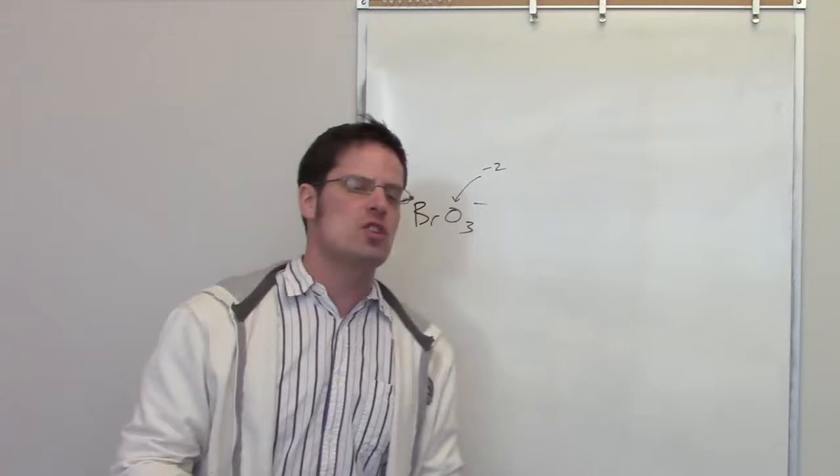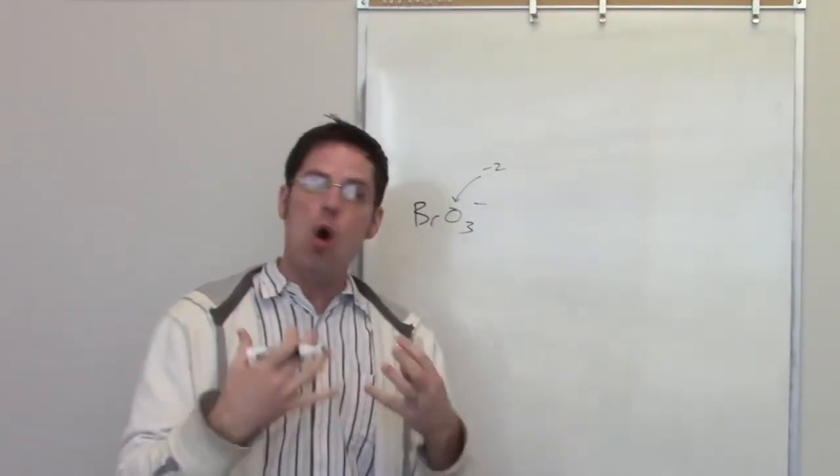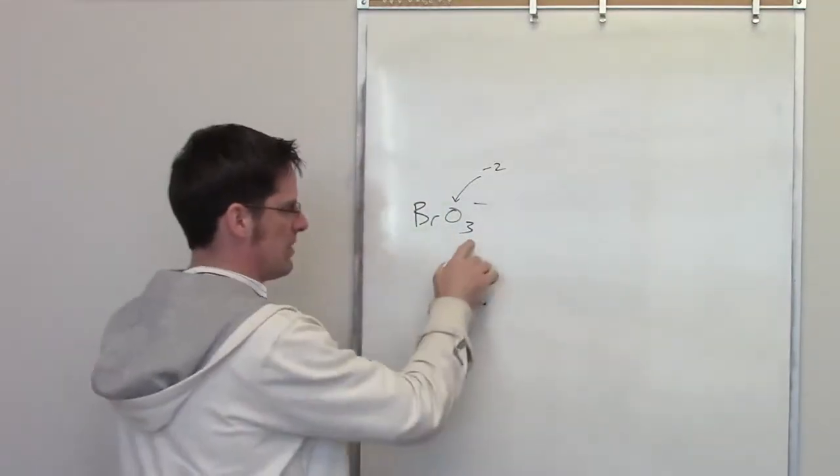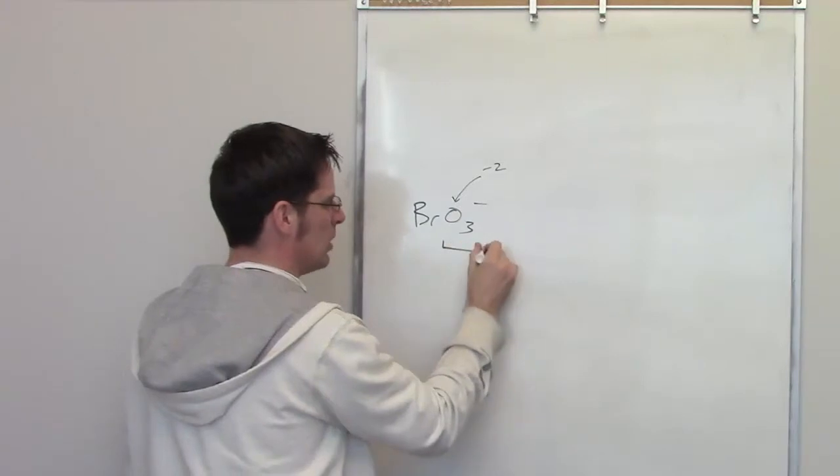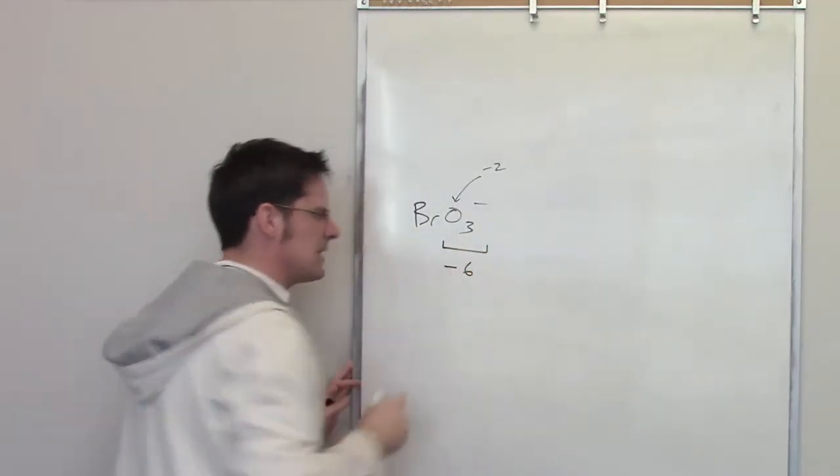So if I have three oxygens and each of them has an oxidation number of negative two, then what is the overall amount of negativeness coming from them? Well, there are three of them, each of them is negative two, so the total charge is going to be negative six. Where does that leave you with bromine?